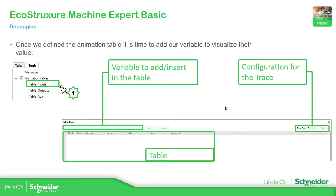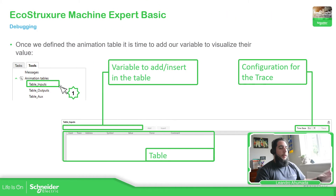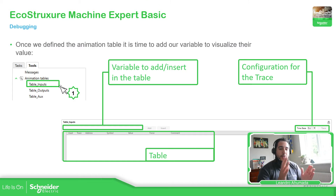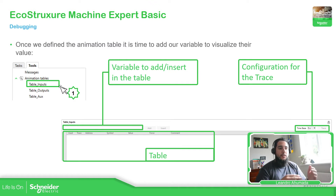Something important that we're going to see now is the configuration of the trace. It is good to see how the value of a variable changes over time — we can see the logic and whether it's working or not. That's why it's useful to use the trace.